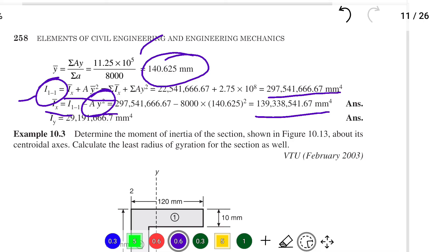The Iy-bar value is already found from the table: Iy-bar = 291,916,666.7 mm⁴. This is the method used to solve the problem. We will see the next problem in the next video. Thank you.